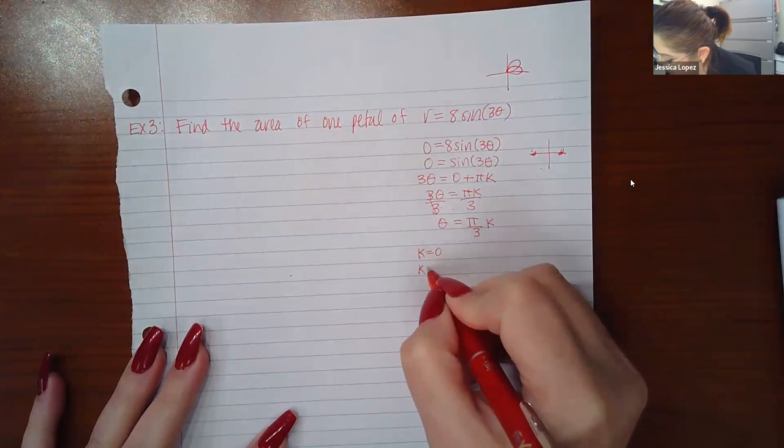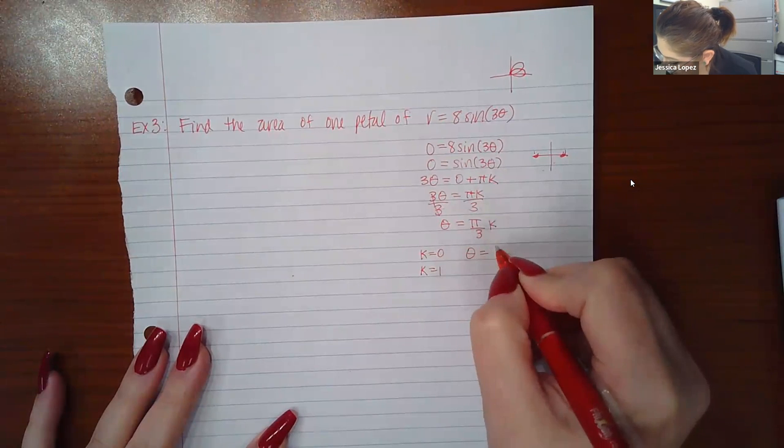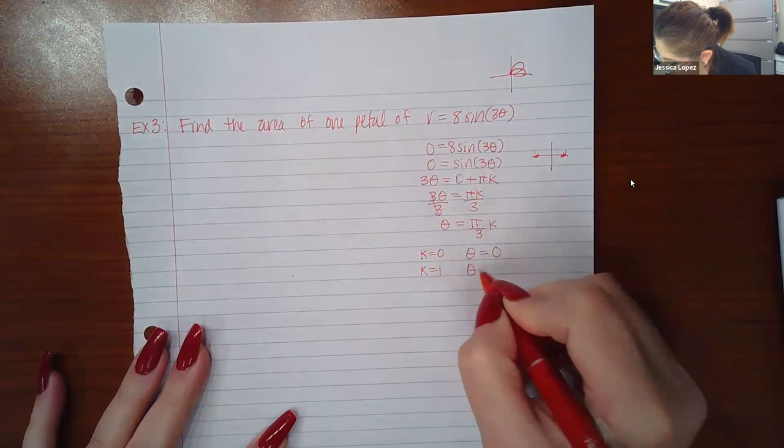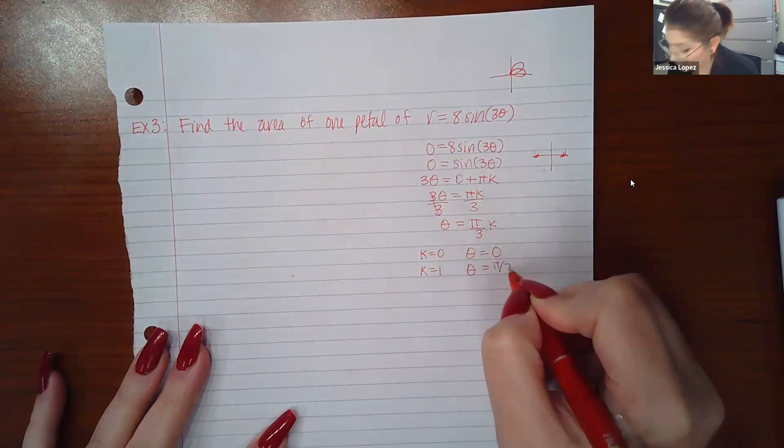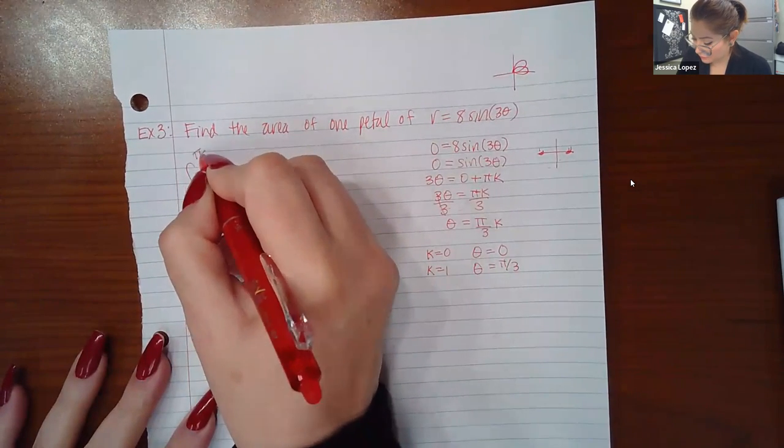Then to find out when that happens the first time, we're going to let k equal to zero and then we'll let k equal to one. So if I let k equal to zero, I have zero times this, which is just zero. And if I let k equal to one, I get pi over three. So then I have those bounds, zero and pi over three.